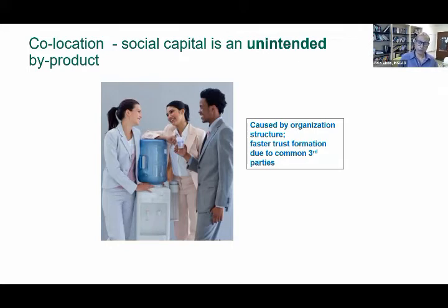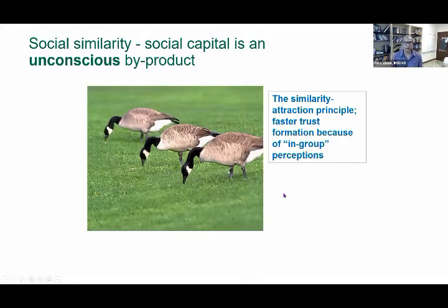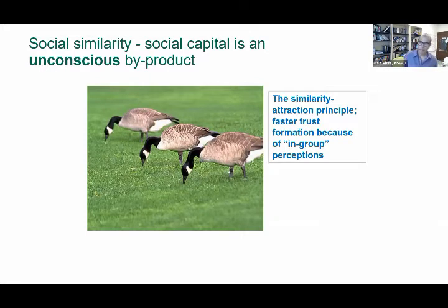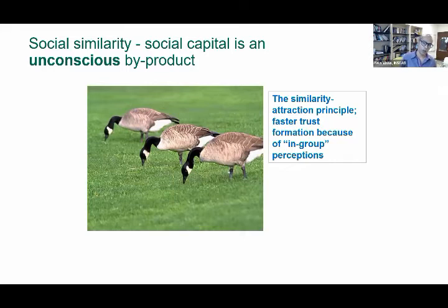That's how trust is formed through common third parties — faster trust formation. Another important way people form connections is that they reach out almost unconsciously to people who are similar to them. You can notice this in your own behavior at a party: you talk to someone you already know, and if you don't know anyone, you tend to go talk to people who are like you.